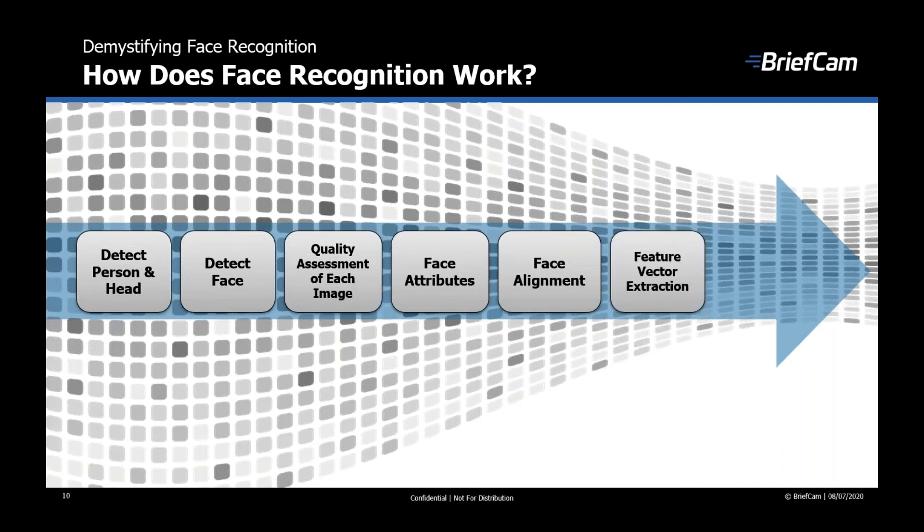Then, BriefCam extracts the unique facial recognition features of the face, such as the distance between the eyes, width of the nose, and shape of the cheekbones, which are the unique identifiers of this face, and encodes them into a unique feature vector that represents this face.